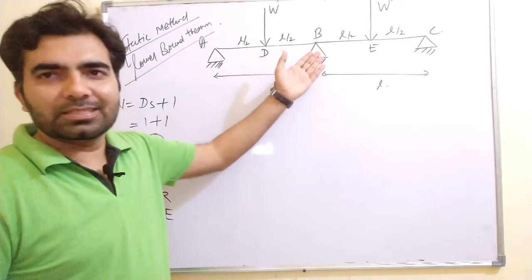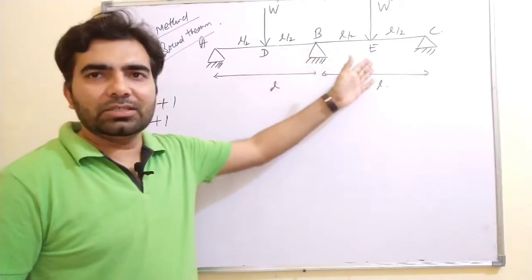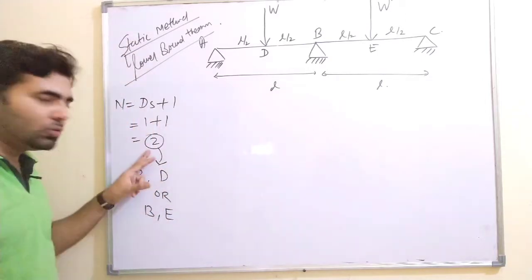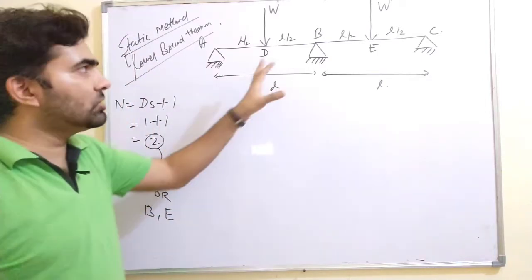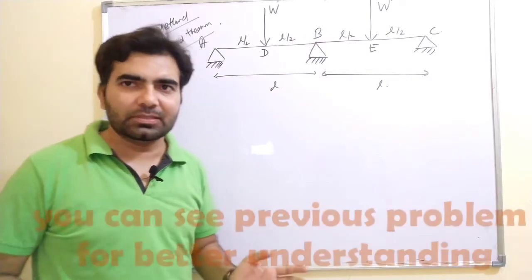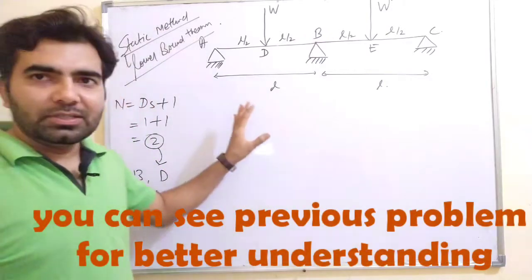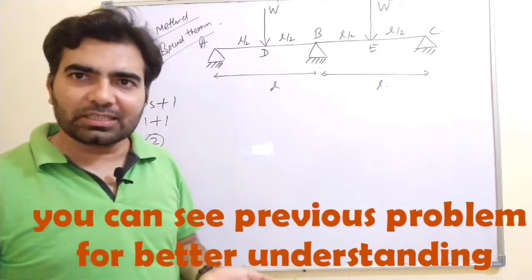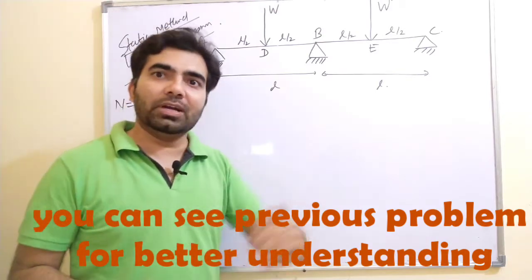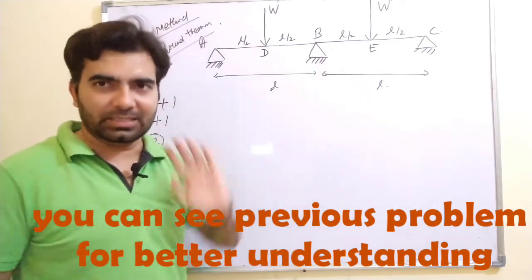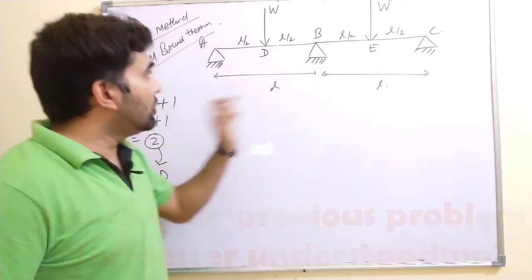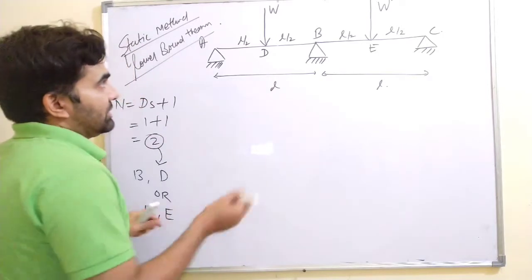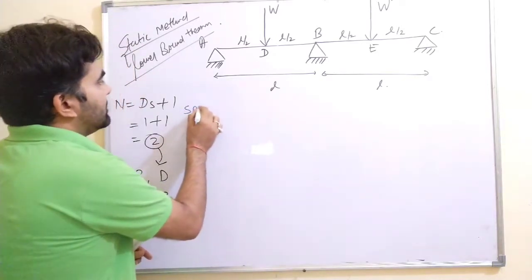These two plastic hinges develop either at points B and D, or at points B and E. If three plastic hinges develop at D, B, and E, that is greater than 2, which is a case of overcomplete collapse. However, the structure will collapse before developing the third plastic hinge when two plastic hinges form.